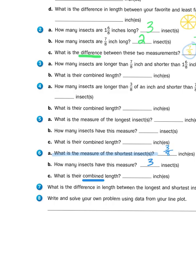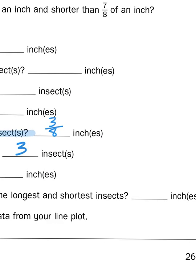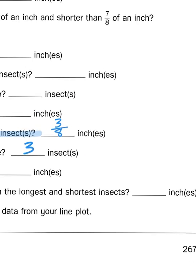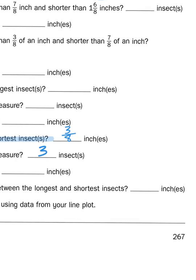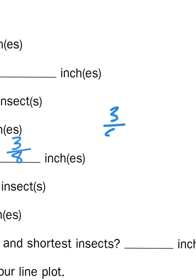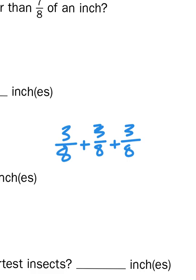I can approach this one of two ways. There are three insects that are three eighths inches long. I can either add them together or multiply them, but I'm going to set up both approaches. Let's start with an addition problem: three eighths plus three eighths plus three eighths. If I add three eighths to itself three times, I'm just adding the numerators: three plus three plus three. That gives me nine eighths.